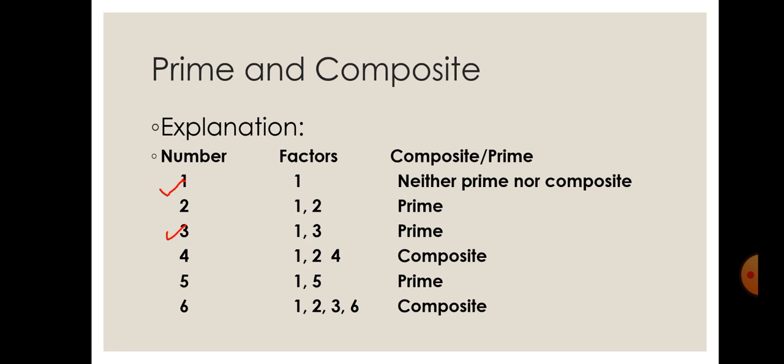Now for the number four — what different numbers divide four? One divides four, two is also a factor of four, and four divides itself. So four has more than two different factors, making four a composite number.